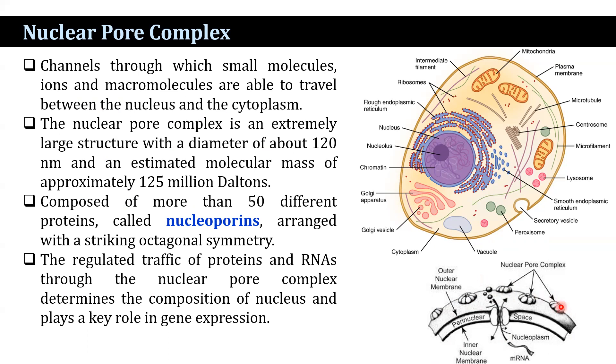The nucleoporins are made from alpha helical regions, beta propellers, and phenylalanine-glycine repeats, known as FG repeats.